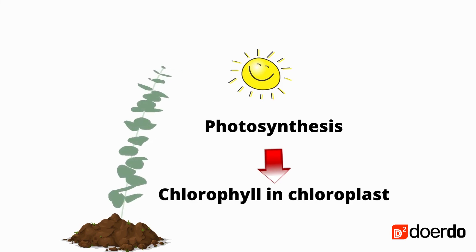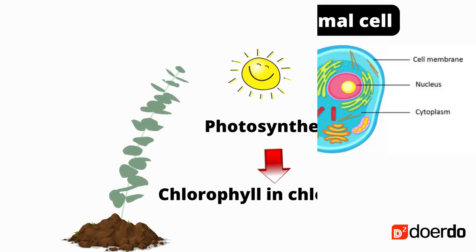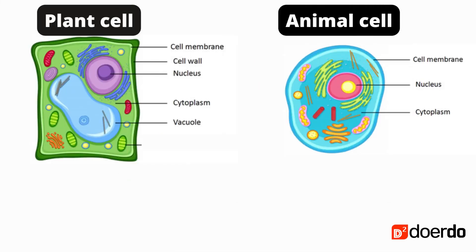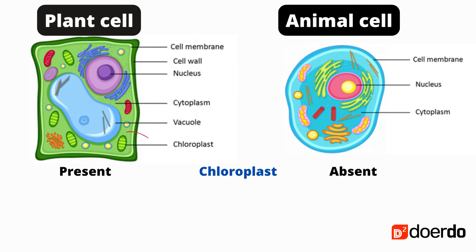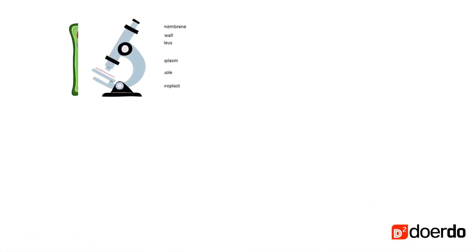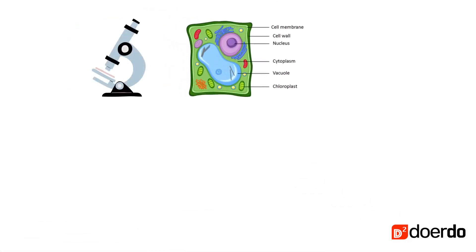Chlorophyll is present in the chloroplast, which converts light energy into chemical energy. Therefore, the chloroplast is only present in plant cells and is absent in animal cells.